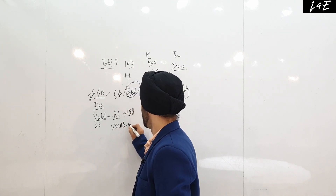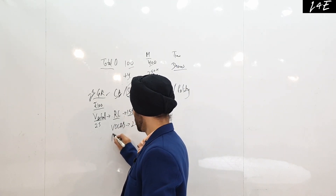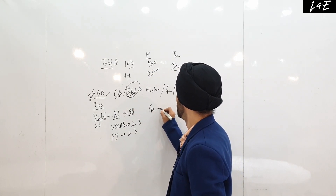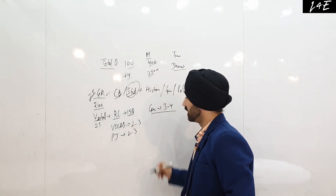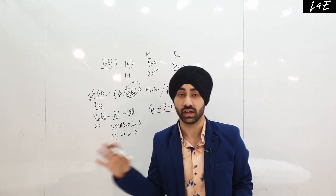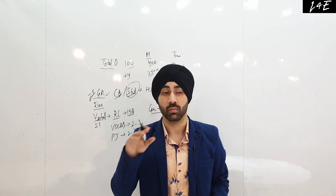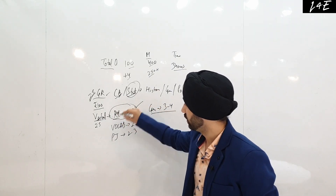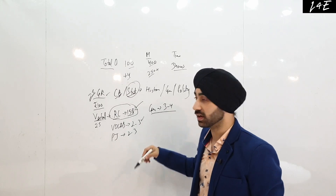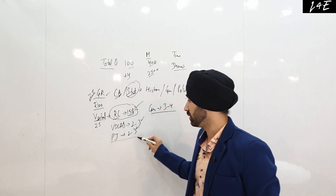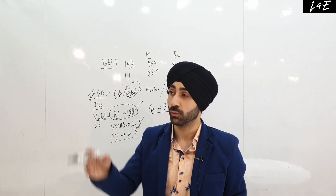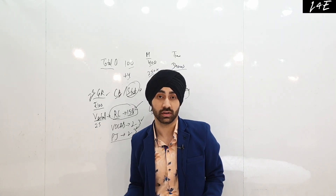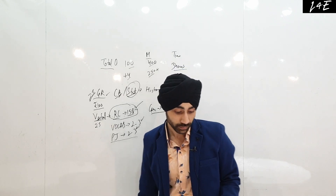In the Verbal section, apart from RC, vocabulary accounts for 2-3 questions, para-jumbles (PJs) are 2-3 questions, and grammar is 3-4 questions. PJs are easy — they will be straightforward without complex options. Grammar is also an easy component; it is not a difficult thing to crack.